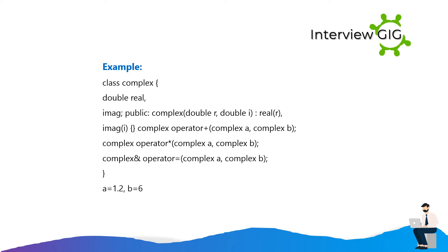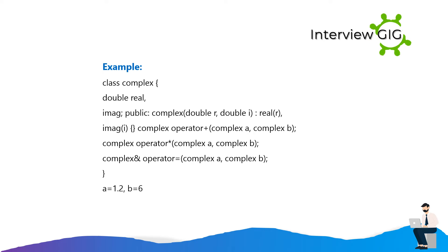Example: class Complex { double real; double imag; public: Complex(double r, double i) : real(r), imag(i) {} Complex operator+(Complex a, Complex b); Complex operator-(Complex a, Complex b); Complex& operator=(Complex a, Complex b); } a = 1.2; b = 6;